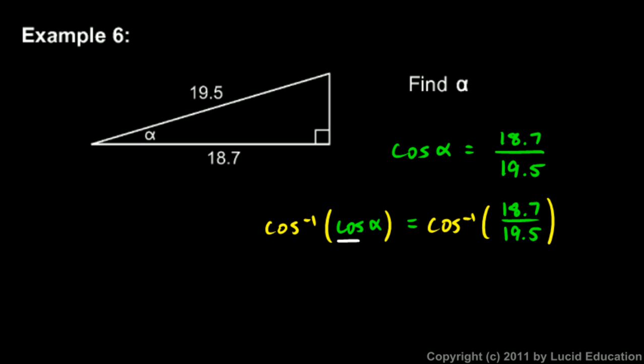look at this: the inverse cosine of the cosine of alpha is just alpha. Because if you have a function and its inverse, they undo each other. Just like the square root of x squared is x, because square root and squaring are inverse operations, here the cosine and the inverse cosine are inverse operations. That's why it's called inverse cosine. So the inverse cosine of the cosine of alpha is just alpha. So the left side becomes alpha, and then the right side is this, the inverse cosine of 18.7 over 19.5.